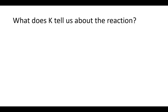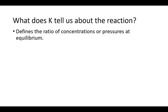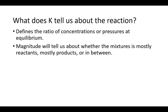So what does the value of K tell us about a reaction? K, the equilibrium constant, defines the ratio of the concentrations or the partial pressures at equilibrium. Those concentrations and pressures don't have to be equal — we just know that there are some reactants and some products at equilibrium, and this K constant defines their ratio. The size of K will tell us whether the equilibrium mixture is mostly reactants, mostly products, or somewhere in between.